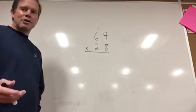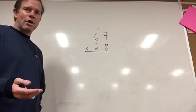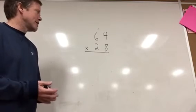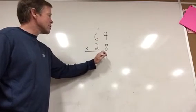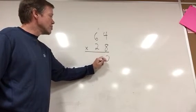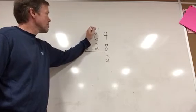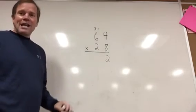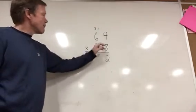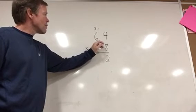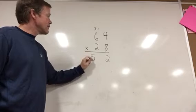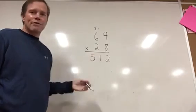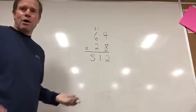So right now, I'm going to start the problem. You should have finished it on your own already, and you're just checking it right now. So we'll start out with 8 times 4 is 32. So the 2 goes down here. The 3 goes up top. 8 times 6 is 48. 48 plus 3 is 51. So check this row. If this row is off, your whole problem would be off.